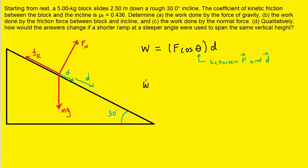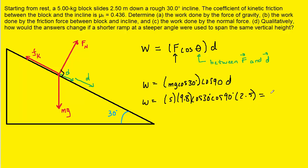On to part C: the work done by the normal force. The normal force equals mg·cos(30°). For the angle theta — that's the angle between the normal force and the displacement — we can see from the diagram that the angle between the normal force and the green displacement vector is simply 90 degrees. So we plug in cosine of 90. When you work this out you get zero joules, because the cosine of 90 equals zero, making the entire expression zero.